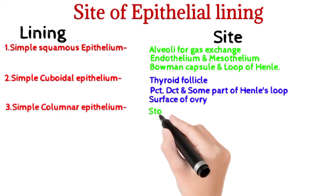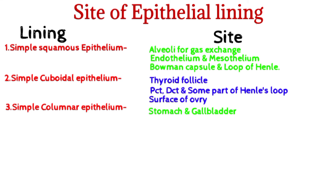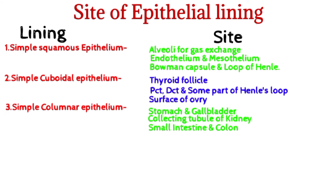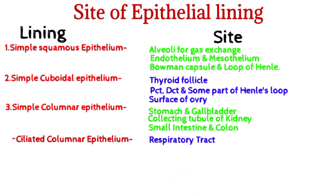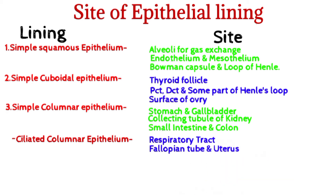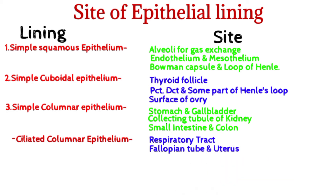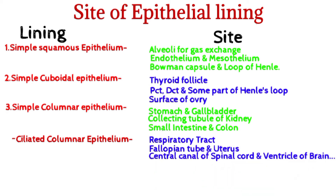Simple columnar epithelium is present in the stomach, gallbladder, collecting tubules of the kidney, small intestine, and colon. Ciliated columnar epithelium is present in the respiratory tract, fallopian tube, urethra, central canal of the spinal cord, and ventricles of the brain.